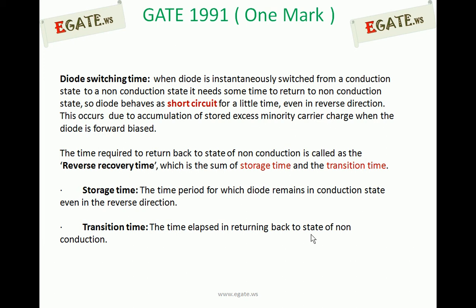Diode switching characteristics — there are two different types of switching times available. One is reverse recovery time and the other is forward recovery time. Reverse recovery time is the time required for the diode to come from forward bias to reverse bias, whereas forward recovery time is the time required to change from reverse bias to forward bias. This question is related to reverse recovery time, because initially the diode is under forward bias and later it is coming towards reverse bias.